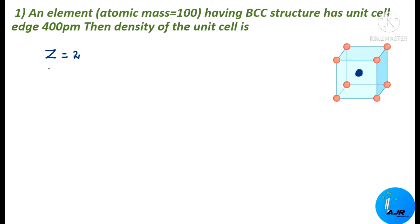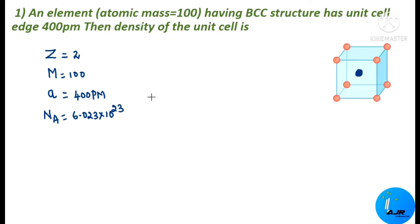M, the atomic mass, is given as 100. The edge length, represented by small 'a', is 400 pm. Avogadro's number is 6.023 × 10²³. Now we shall write down the density formula: ρ = (Z × M) / (a³ × Nₐ). Since all values are given, we can directly substitute.